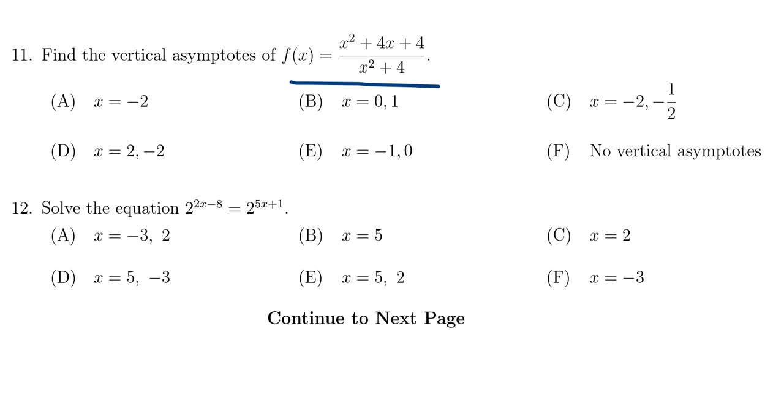We're given a rational function right here: f of x equals x squared plus 4x plus 4 over x squared plus 4. And we're supposed to find the vertical asymptotes of this graph.